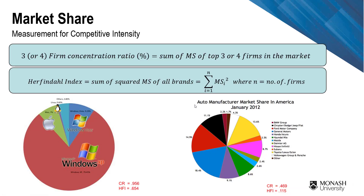Next, we look at measurement for competitive industry intensity. The first is the firm concentration ratio, which is simply the sum of the market shares of the top three or four firms in the market — you can define it as CR3 or CR4. The second measure is the Herfindahl index, which is the sum of the squares of market share across all brands. Let's look at operating systems — the top three being Windows XP, Windows Vista, and Mac, though this data is from some time ago.